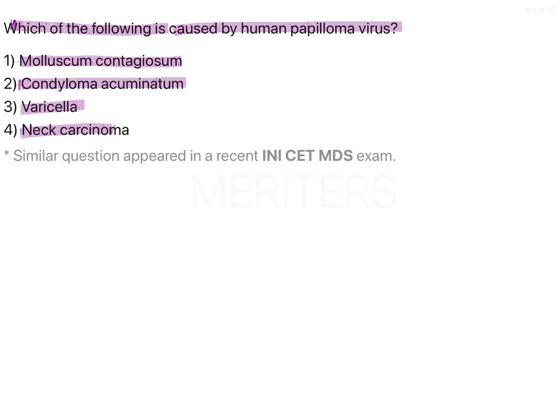Human papilloma virus is an important virus because it can lead to different types of dysplasia, infections, and cervical cancer. It is a high-risk virus — nearly 80% of the population range can be affected by it. It is most commonly seen on peripheral sites rather than skin or intraoral sites.